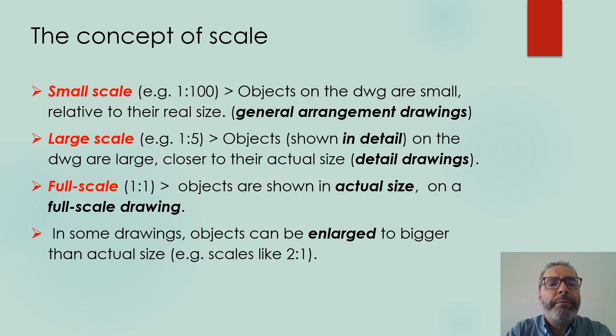We have different ways of referring to the scales. Small scale, for example 1 to 100, means that objects on the drawing, drawing is normally abbreviated as DWG, are small relative to their actual size. For example, in general arrangement drawings.